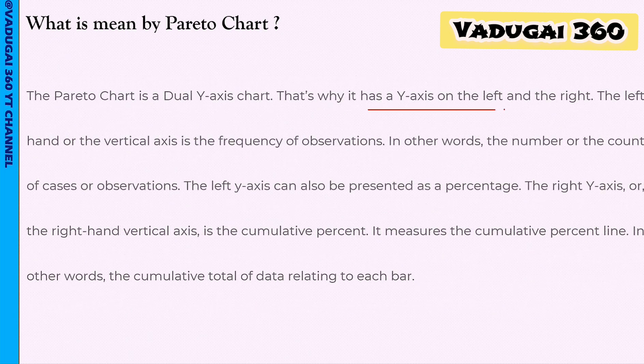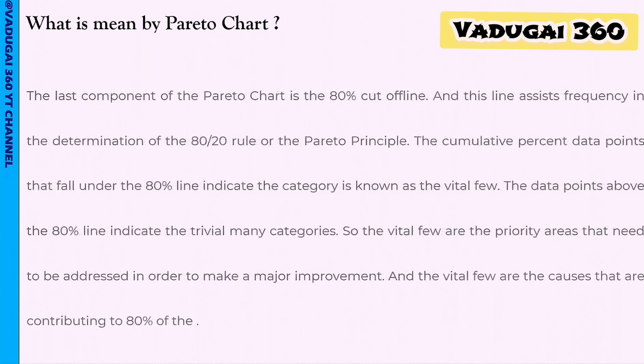The Pareto chart has an x and y axis. The x-axis is the base. The Pareto chart is a bar chart. X and Y represent the Pareto variables. We are going to look at the Pareto chart structure.